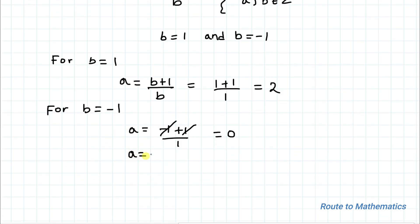As the value a = 0 doesn't satisfy the equation, so b = -1 and a = 0 get discarded.